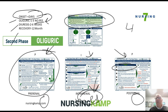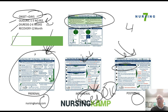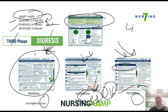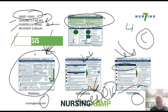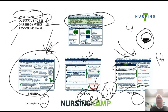The oliguric period can last anywhere from one to three weeks. Once the underlying condition is resolved, the patient moves into the diuresis stage, where the kidney starts functioning again and urine output returns. The big problem with diuresing is that the patient could become very hypovolemic. Sometimes acute kidney injury can result in a 12-month recovery period, and the patient could ultimately end up on hemodialysis.